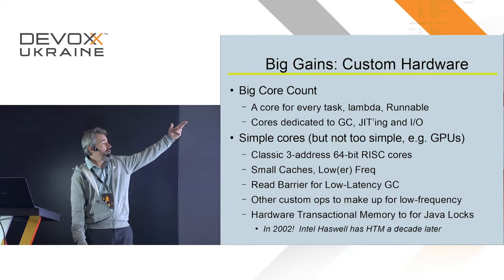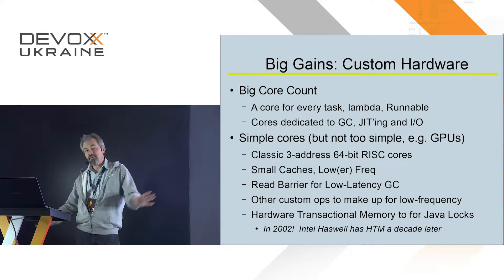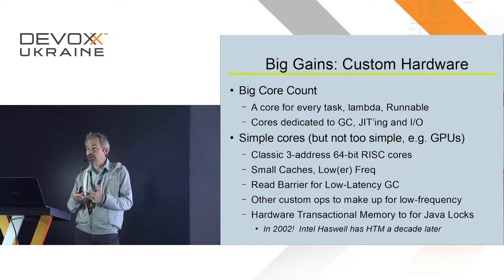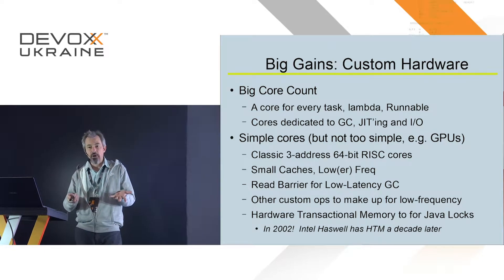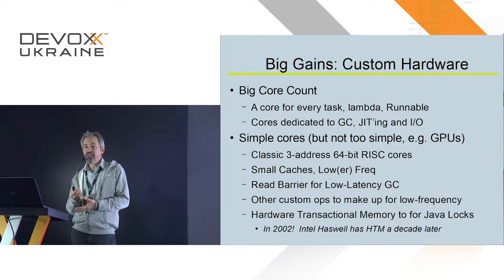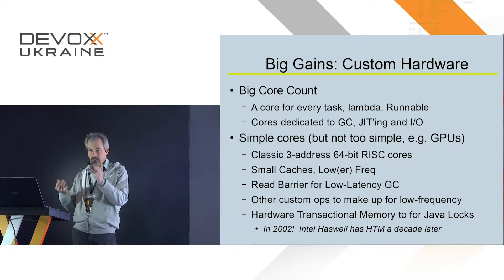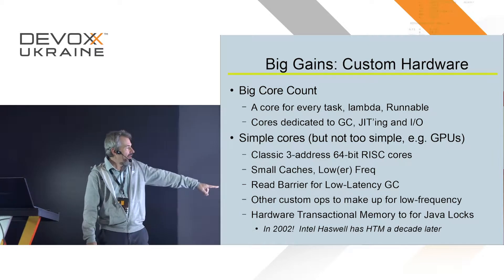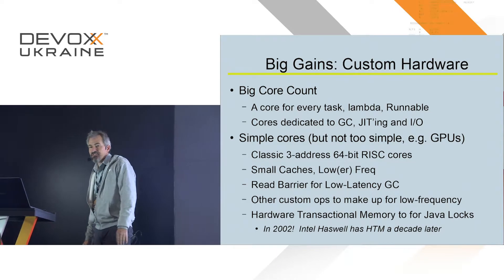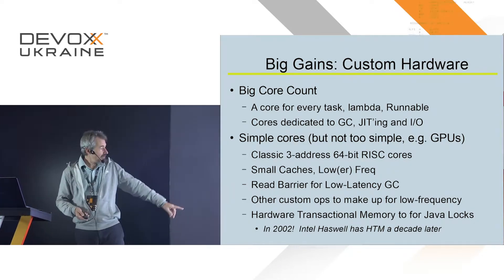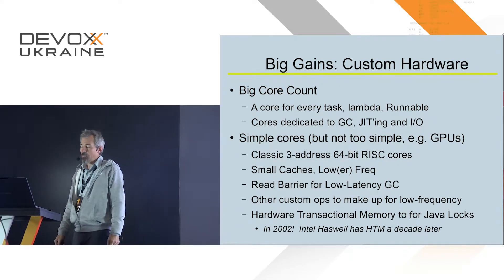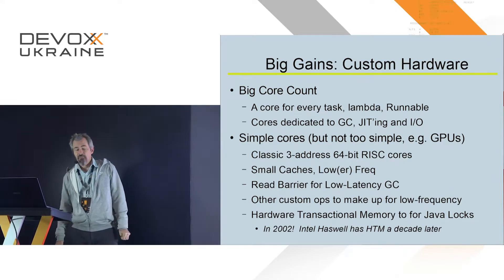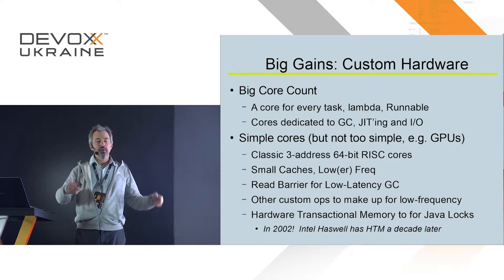What was in that big gain? Big core count — a dedicated CPU for every task, every lambda, every runnable. Lots of cores left over to run garbage collection, JITting, and IO. 64-bit three-address RISC chips with smaller caches than x86 and a little lower frequency, plus a couple of extra hardware instructions to accelerate things we'd use a lot. One of them — the low-latency GC — lives on in Azul's current business model. And then there was the hardware transactional memory, for letting us run correct Java code in parallel through a lock at the same time. A decade later, Intel Haswell started showing up with a little HTM hardware.